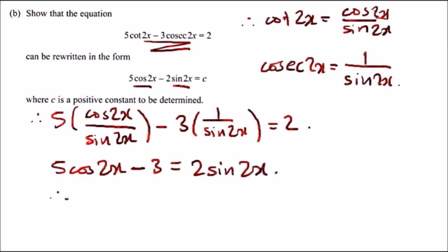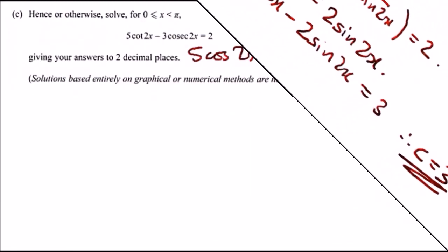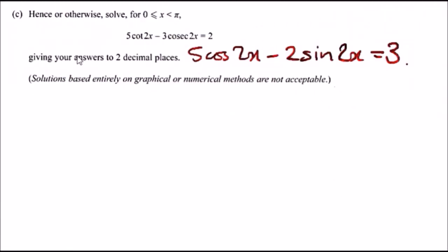Rearranging it, subtracting this and adding 3, we're going to get 5 cos 2x minus 2 sine 2x equals 3, and therefore the value c is 3.